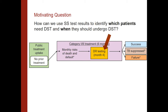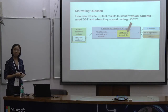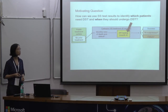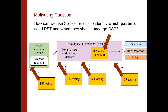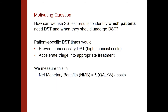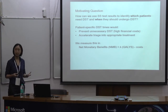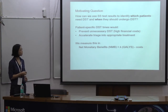Currently, DST is being done at month four, but with this new technology it's unclear whether it should be done earlier or later in first-line therapy. We wanted to define patient-specific DST times that would prevent unnecessary testing — which has high financial costs — while accelerating triage and appropriate treatment for patients with drug-resistant tuberculosis. Recall that only about 3% of TB cases in India have drug-resistant TB, so it's a low-prevalence population, and we want to focus on high-risk patients we can identify using the test.